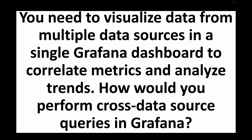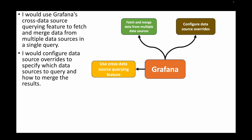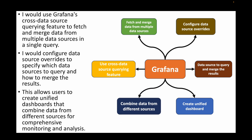The next question: you need to visualize data from multiple data sources in a single Grafana dashboard to correlate metrics and analyze trends — how would you perform cross data source queries in Grafana? We can make use of Grafana's cross data source querying feature, which allows fetching and merging data from multiple data sources into a single query. We can also configure data source overrides to specify which data sources to query and how to merge the results, enabling unified dashboards for comprehensive monitoring and analysis.